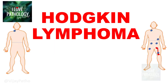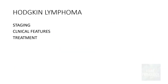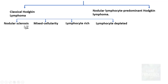Moving on to the topic, this is the final part of the Hodgkin Lymphoma series where I will be discussing staging, clinical features, and a bit about treatment of Hodgkin Lymphoma. Having understood the concepts of pathogenesis and morphology of Hodgkin Lymphoma, we know it is categorized into classical Hodgkin Lymphoma and nodular lymphocyte predominant Hodgkin Lymphoma. Classical Hodgkin Lymphoma is further subtyped into nodular sclerosis, mixed cellularity, lymphocyte rich, and lymphocyte depleted types, which we covered in the previous session.